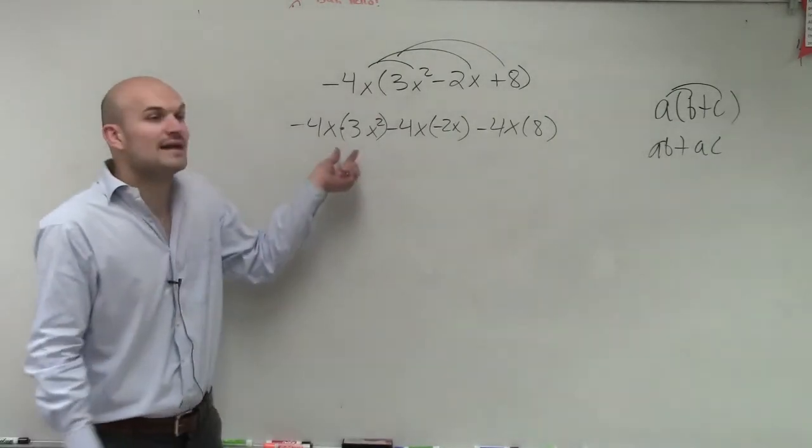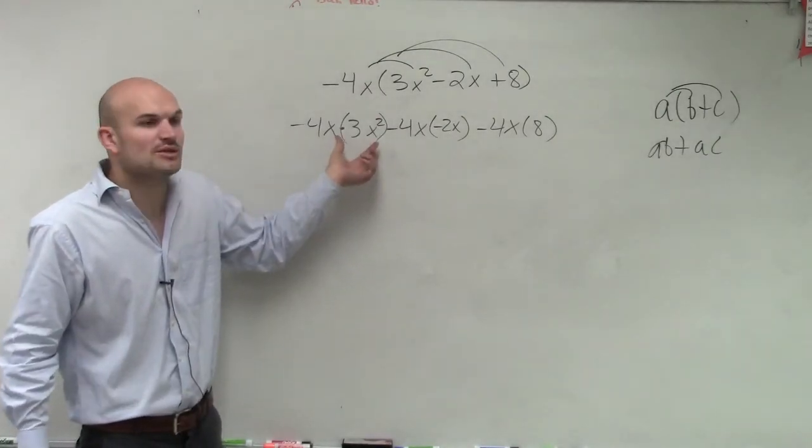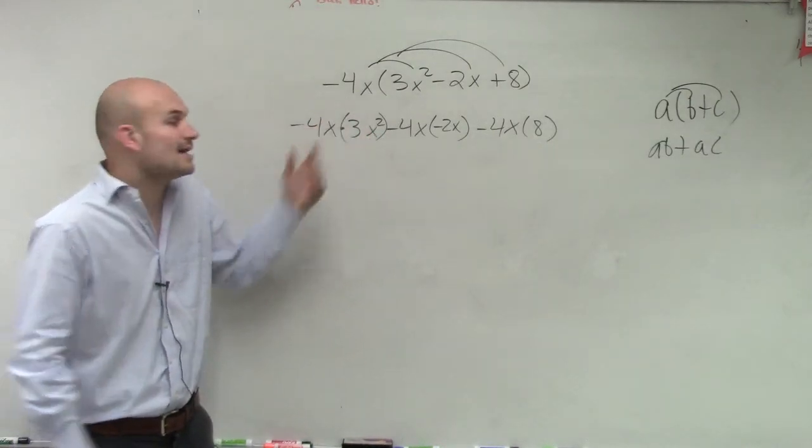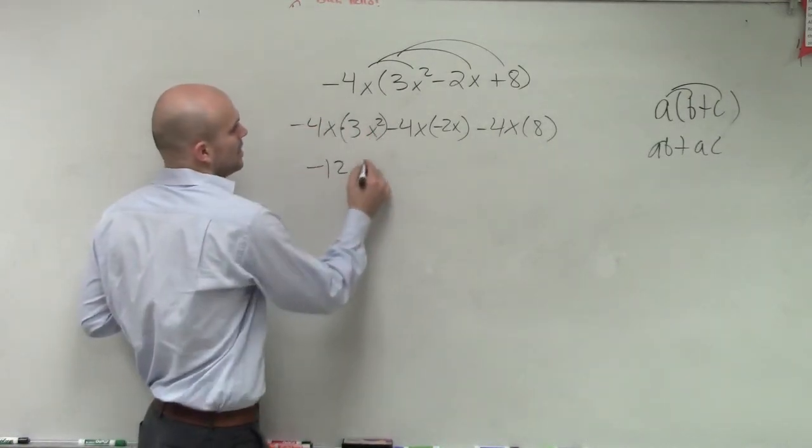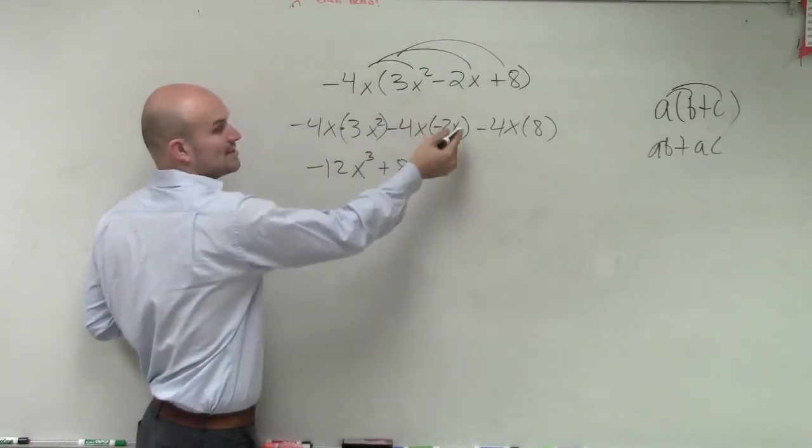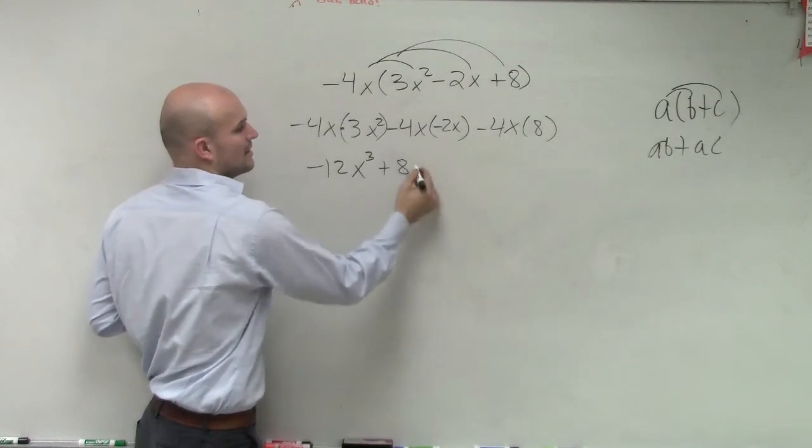So therefore, remember, now we're going to multiply our numbers. And what happens when we multiply exponents? What do we do with the exponent? Add, subtract, multiply? Add them. So therefore, negative 12x cubed. Here, I get positive 8. Negative 4 times negative 2 is positive 8x squared.